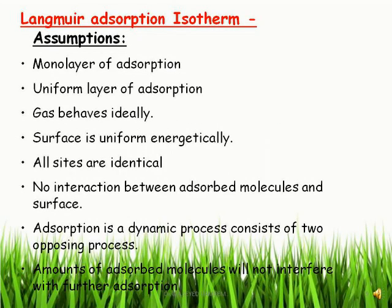This slide shows the Langmuir adsorption isotherm. In the Langmuir adsorption isotherm, the equation is derived on the basis of certain assumptions. Langmuir assumed the following: first, monolayer adsorption — only one layer is adsorbed; second, the layer is uniform; third, the gas (adsorbate) behaves ideally; fourth, the surface is energetically uniform; and fifth, all sites are identical, so adsorption takes place uniformly at all sites.